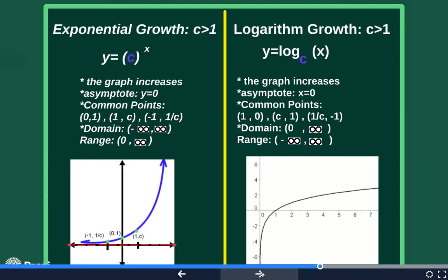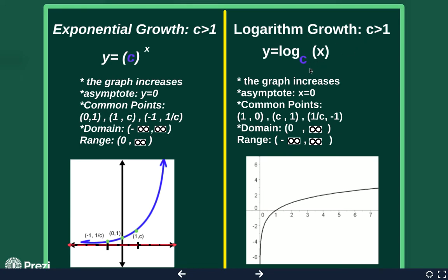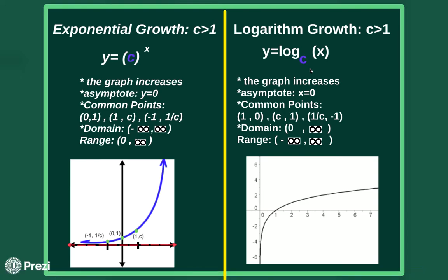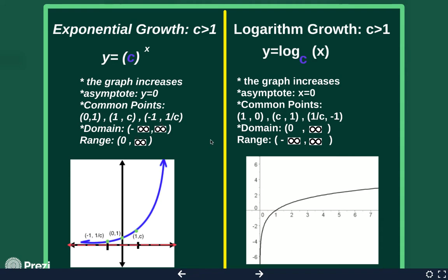Now we're going to talk about graphs of logarithms. Logarithm graphs relate directly to exponential graphs because they are inverses. We'll start with exponential growth, review those properties, and compare them to what logarithm growth looks like. For exponentials, this is a growth because the base is larger than one. Same with the logarithm — if the base of the log is greater than one, it will be a logarithm growth. Let's compare the characteristics of each graph.